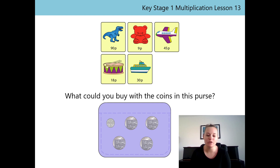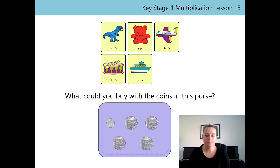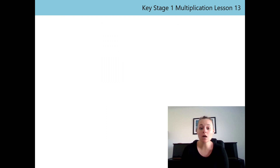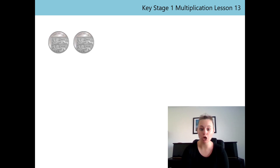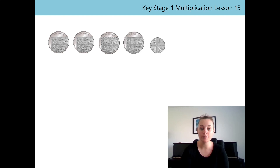Let's have another practice. You've got to work out what you could buy with the coins in this purse. Now this purse looks a little bit different to the last purse. So let's go through the steps again to work out how much money we have in our purse. Who can remember what the first thing we needed to do was? That's right — we needed to work out how many coins we have in our purse. So let's count them: one, two, three, four, five. There are five coins.